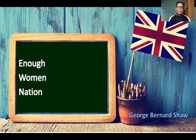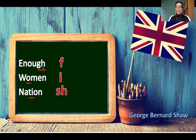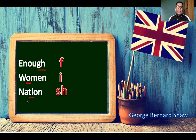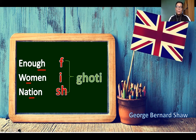For example, consider that the last syllables or sounds of 'enough,' 'women,' and 'nation' — when combined — may form the word 'fish' when read. We have the 'f' sound from 'enough,' the 'i' sound from 'women,' and the 'sh' consonant sound from 'nation.' If combined and spelled, this could be rendered as 'ghoti.' This is an example of an irregularity in the English language.